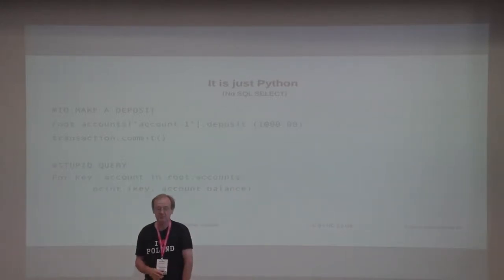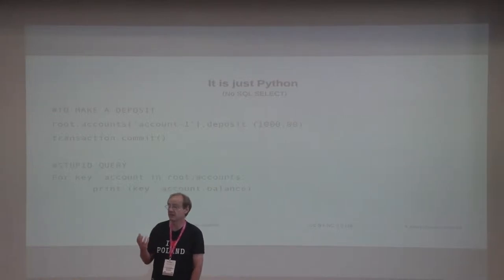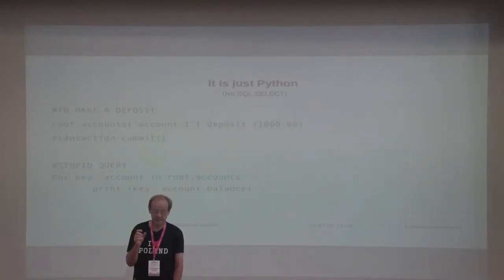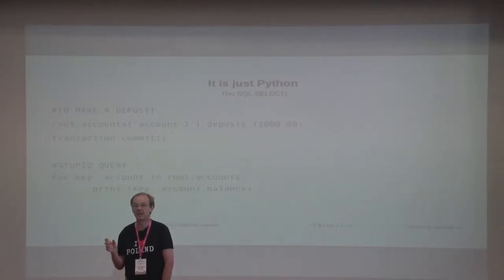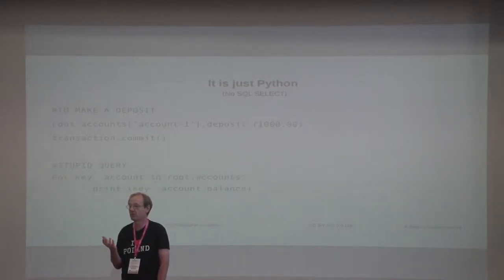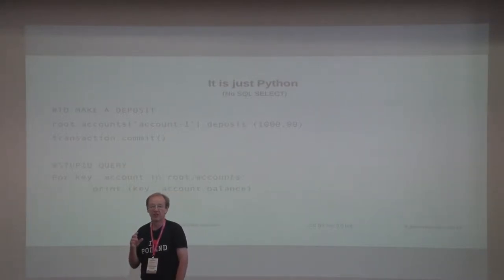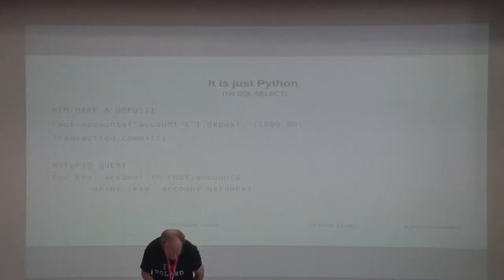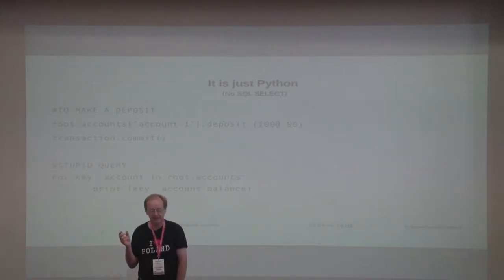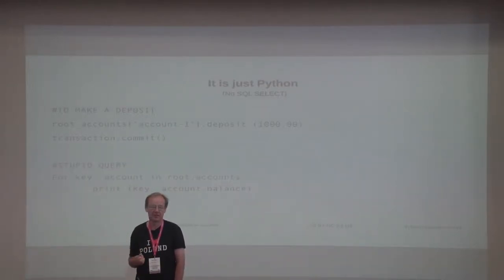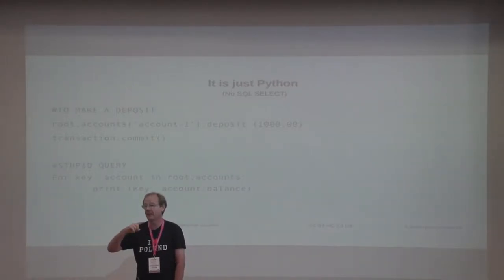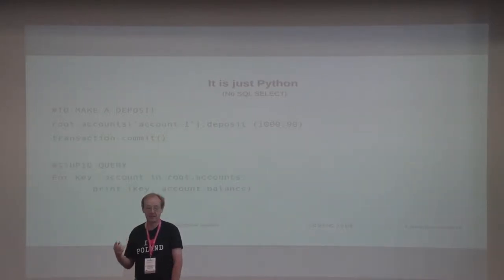It's just Python. To get a value, you grab the root object, ask it for the list of accounts, give it the account name, and send it a message like 'make a deposit.' No SELECT, no queries. If you want to query — for example, see all account objects — you can iterate over the loop with 'for key, value in root.accounts' and print out the value's dunder repr, which prints a string representation of the object. It's very easy to iterate over a large number of different classes of objects in a single node.